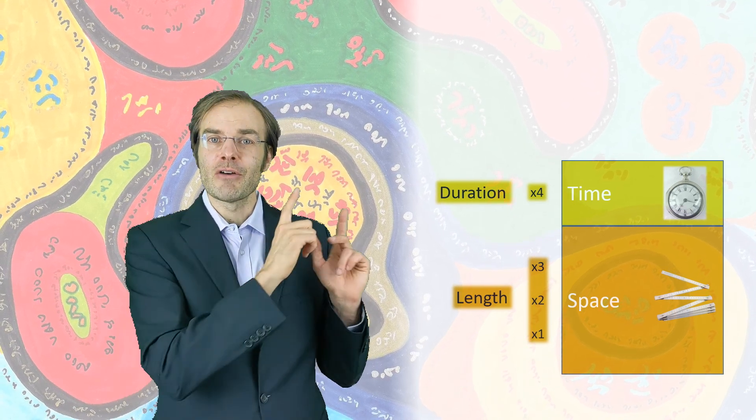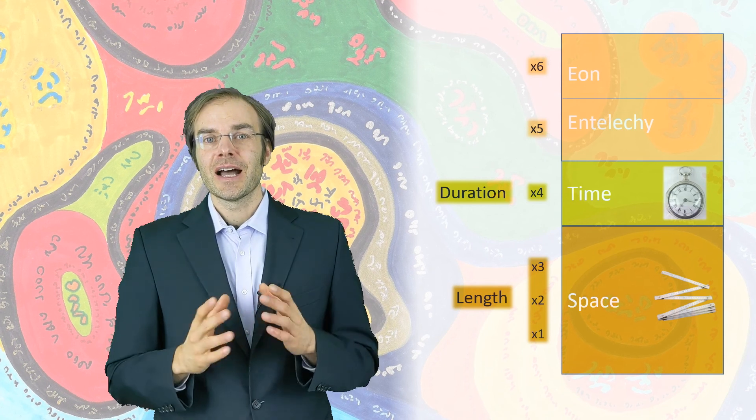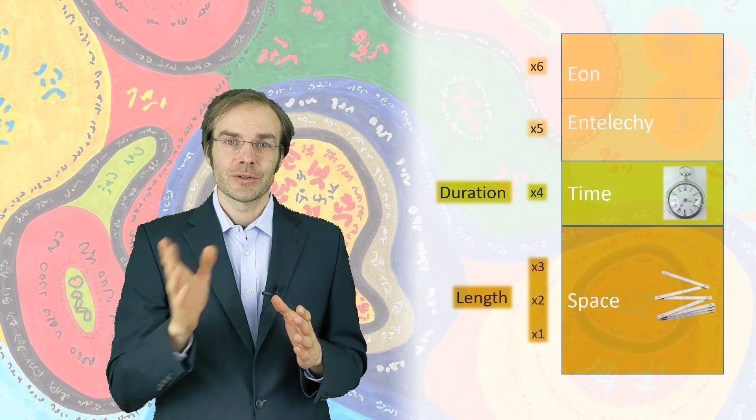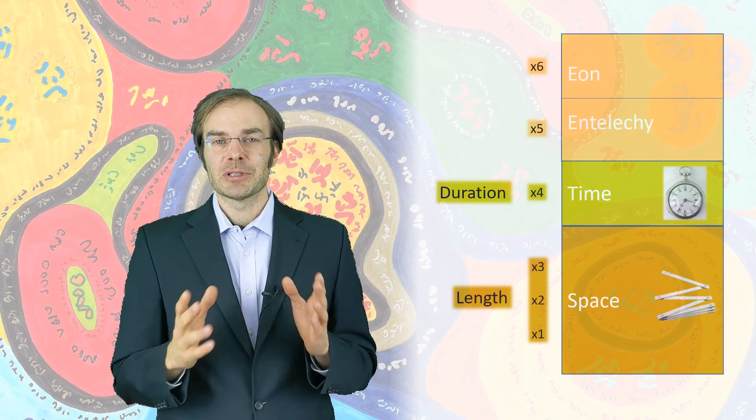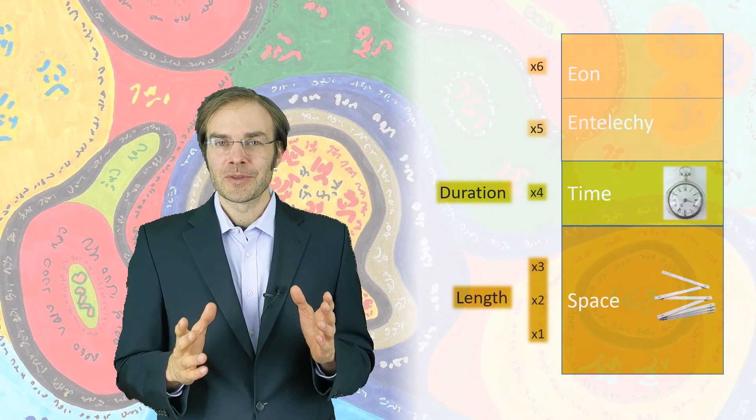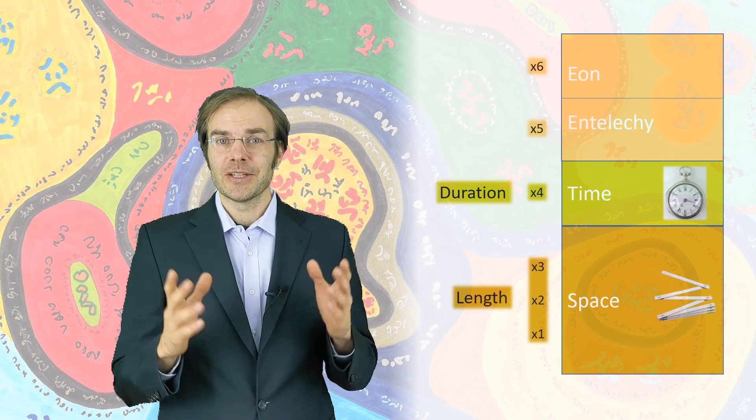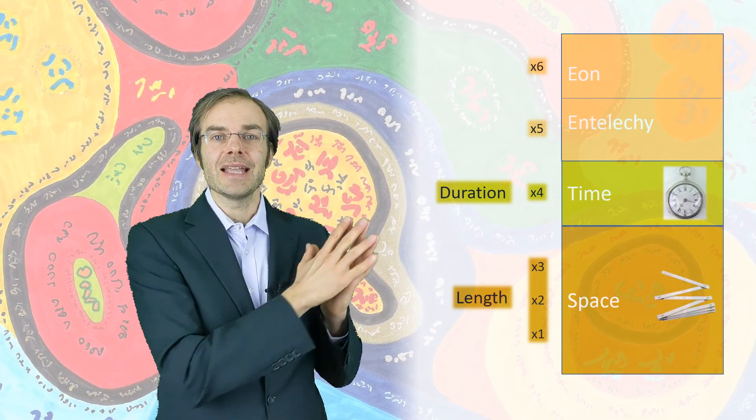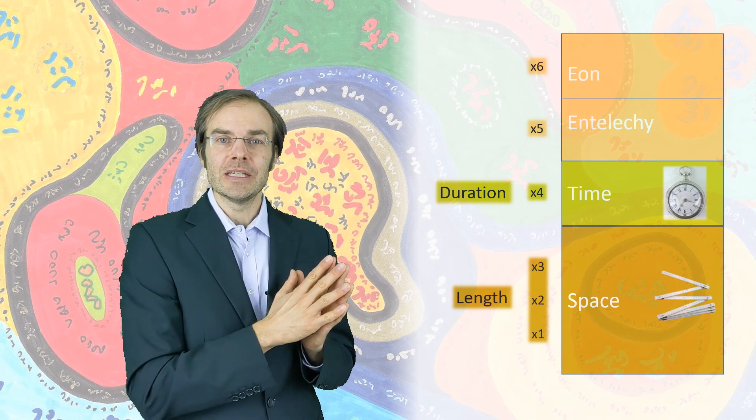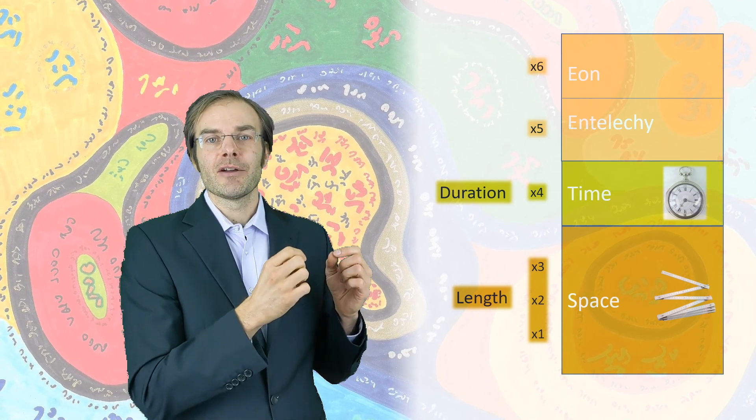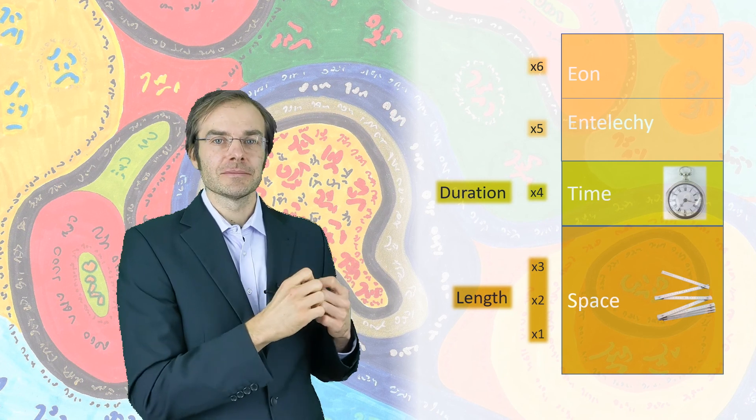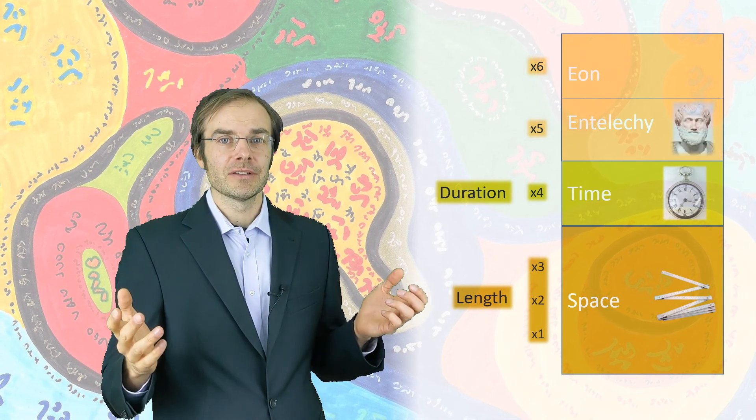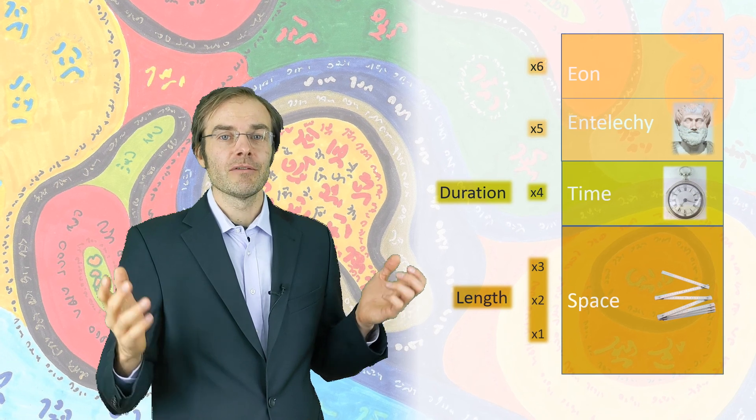First about the naming of our two additional dimensions. Heim had, as I said, he took many terms of Konrad-Martius, but in general he had a soft spot for ancient languages, ancient Greek mainly. And so he called the fifth dimension Entelechy, which means having a goal in itself or a meaning.